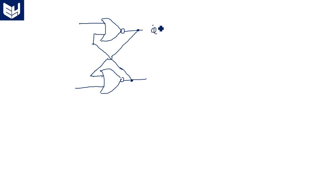Two NOR gates are used. A NOR gate is nothing but an OR gate with a bubble. This is the NOR-based SR latch. The second input of the first gate is the output of the second gate, and similarly the second input of the second gate is the output of the first gate — they are cross-connected together. So this output is Q-bar and this is Q, this is S and this is R.